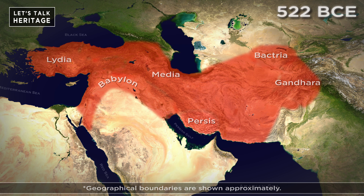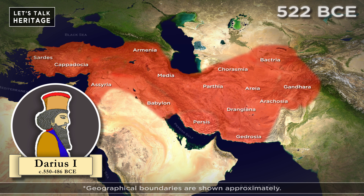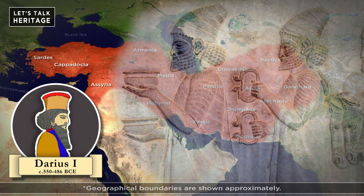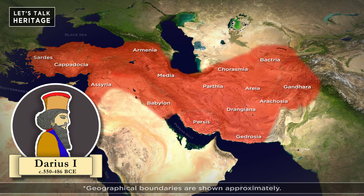In 522 BCE, Darius the Great became the mighty Achaemenid king after Cyrus. He reorganized his empire by creating local administrative units called Satrapies, governed by Satraps or governors. These Satrapies paid fixed yearly taxes in gold and silver to the Persian kings — an administrative unification of the regions to keep the empire under Persian control.